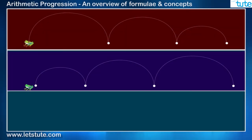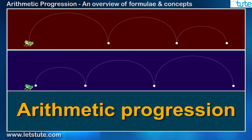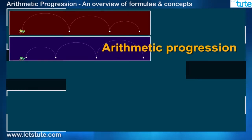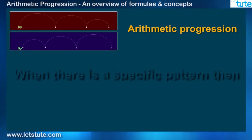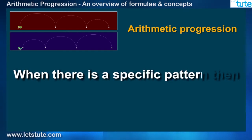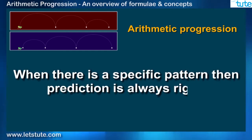On similar lines, we have an interesting topic in math called arithmetic progression, which deals with a particular type of pattern. And when there is a specific pattern, then prediction is always right or we must say perfect.